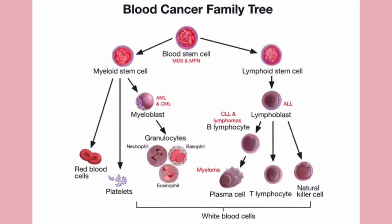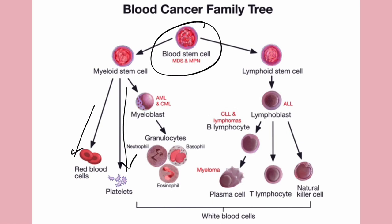This is the blood cancer family tree. Remember that we always start with a precursor that lives in the bone marrow, and gradually they mature going down the line depending on the cells needed. There are different growth factors that stimulate going down to a red blood cell or a platelet — remember erythropoietin, thrombopoietin, and so forth.